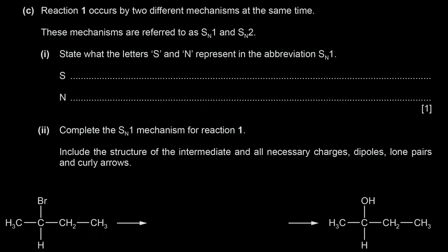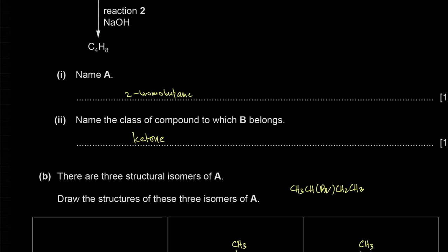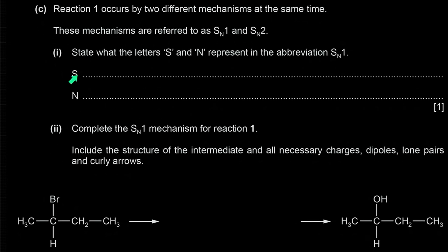Reaction 1 occurs by SN1 and SN2 mechanisms simultaneously. In the abbreviation SN1: S stands for substitution and N stands for nucleophilic. The reaction converts 2-bromobutane into butan-2-ol — a nucleophilic substitution reaction. Tertiary haloalkanes favor SN1 and primary haloalkanes favor SN2; a secondary haloalkane like 2-bromobutane undergoes both simultaneously.